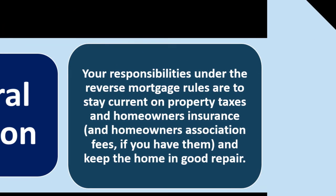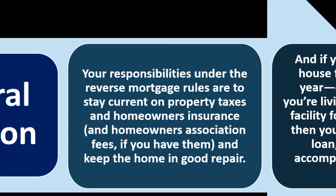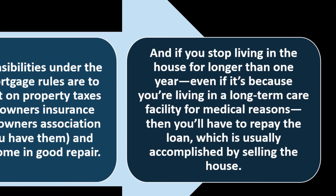Collateral protection: your responsibilities under reverse mortgage rules are to stay current on property taxes, homeowner's insurance, and homeowner's association fees if you have them, and to keep the home in good shape. If you stop living in the house for longer than one year — even if it's because you're living in a long-term care facility for medical reasons — you'll have to repay the loan, which is usually accomplished by selling the house.